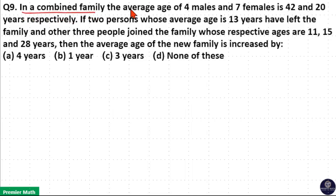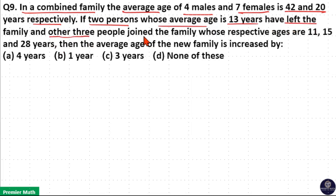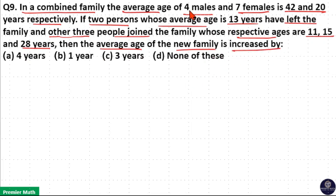In a combined family, the average age of 4 males and 7 females is 42 and 20 years respectively. If 2 persons whose average age is 13 years have left the family, and 3 other people who joined the family have respective ages of 11, 15, and 28 years, then the average age of the new family is increased by how much?